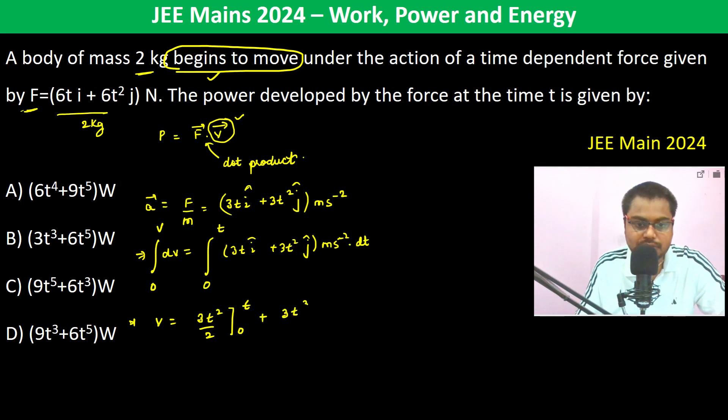Plus 3T cube by 3, 0 to T, and this is going to be meter per second because it's multiplied with dT. So therefore velocity becomes 3 by 2 T square plus T cube, and this is I cap, this is in J cap.